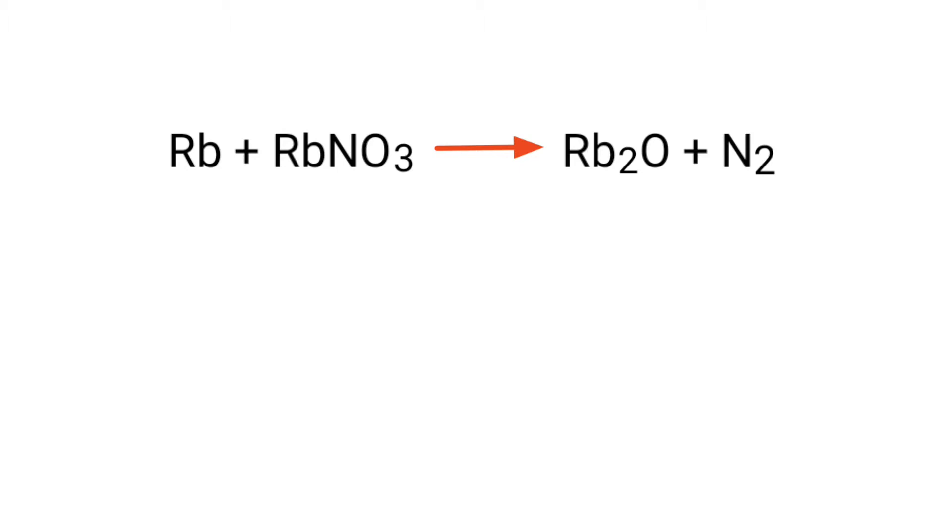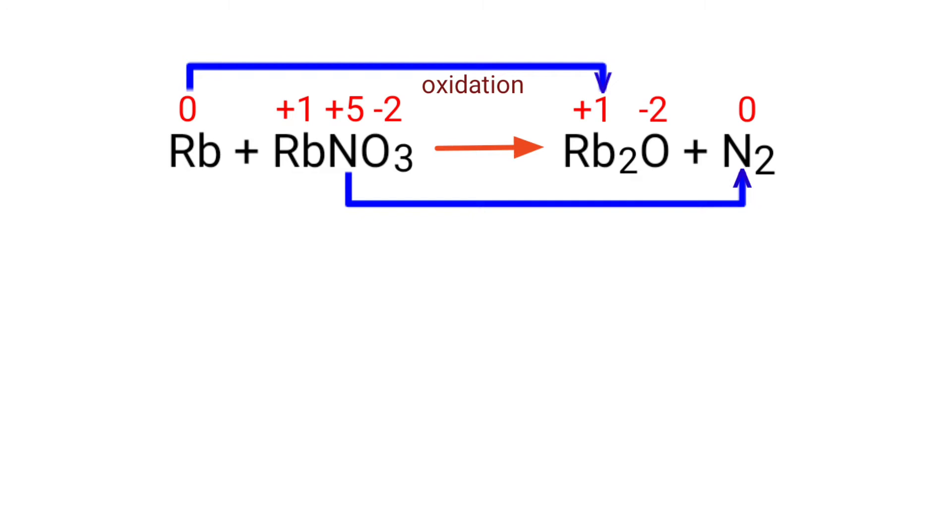Figure the reducing and oxidizing agents by the rules of assigning oxidation numbers. In this equation, rubidium has a charge of 0 and it's changing into +1, so rubidium is being oxidized. Nitrogen has a charge of +5 and it's changing into 0, so nitrogen is being reduced.